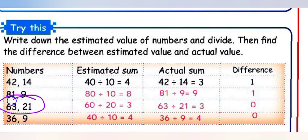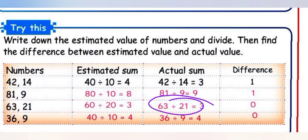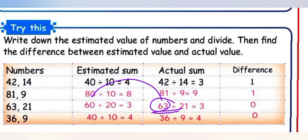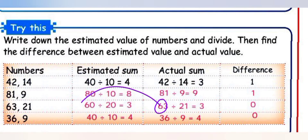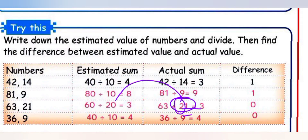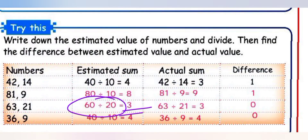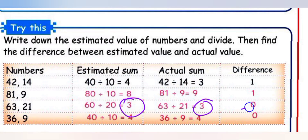Next: 63 ÷ 21. Three 21s are 63, so actual answer is 3. Estimated: 63 rounded to 60 (ones place 3, less than 5). 21 rounded to 20 (ones place 1, less than 5). Estimated: 60 ÷ 20 = 3. Difference: 3 minus 3 equals 0.